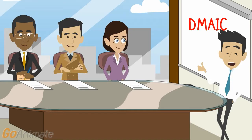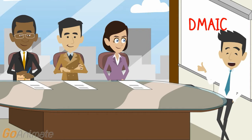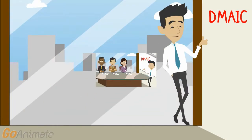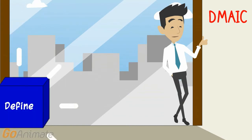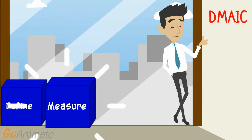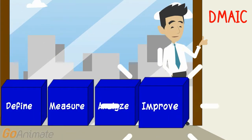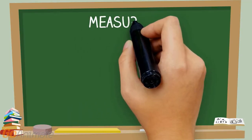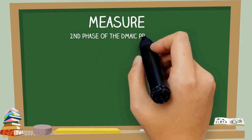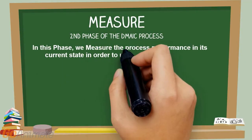Hello, ladies and gentlemen. Today we are going to talk about a five-step improvement process known as DMAIC. DMAIC stands for Define, Measure, Analyze, Improve, and Control. Measure is the second phase of the DMAIC process.